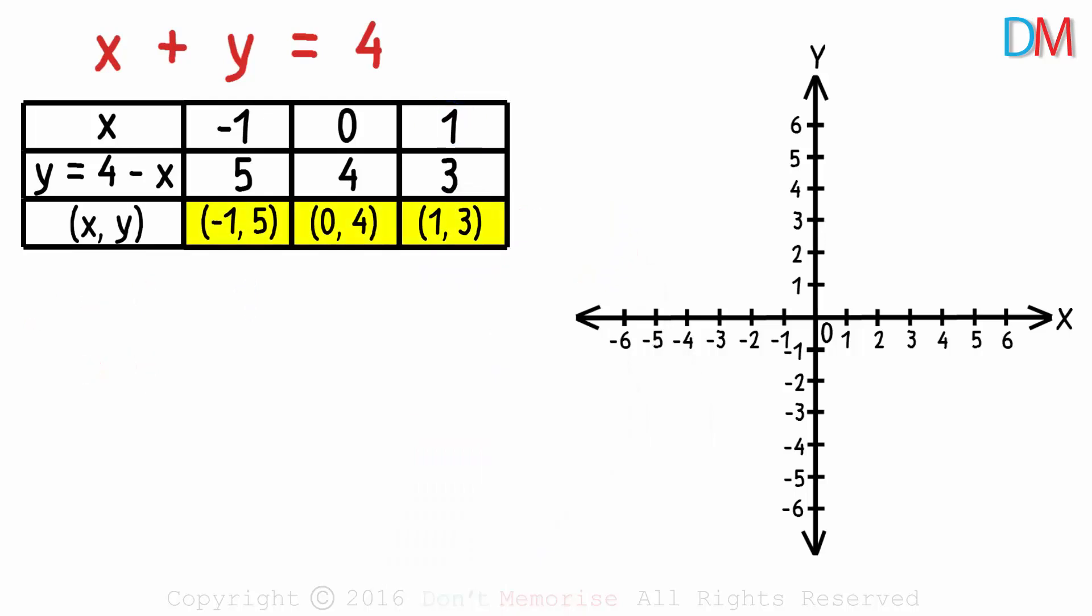Now we got three pairs of values which satisfy this equation. Now to get the graph of this equation, we just need to plot these points on the coordinate plane and join them. Negative 1 comma 5 will lie here. Zero comma 4 will lie here. And 1 comma 3 can be plotted here. Now when we join these three points, we will get the graph of this linear equation.